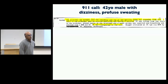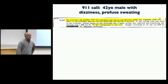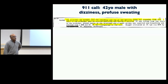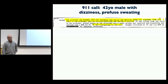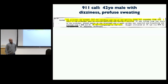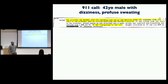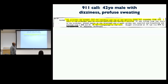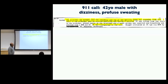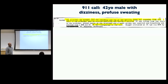Let's start by thinking through a patient, because a lot of our work at the Broad is inspired by specific human disease problems. Here's one: a 42-year-old male who presented with dizziness and profuse sweating. This is the actual ambulance sheet for that person.